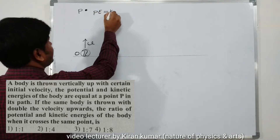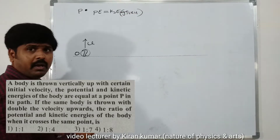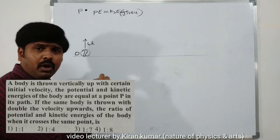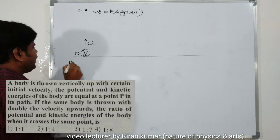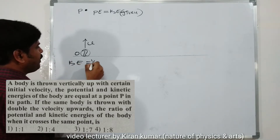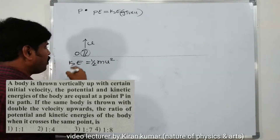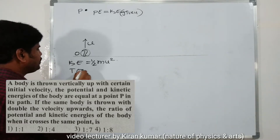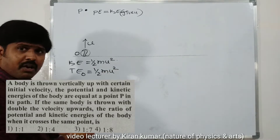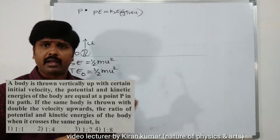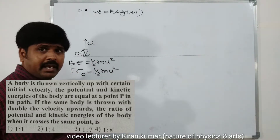Initially, the body has total energy in the form of kinetic energy only. That kinetic energy formula is ½mu². So the total energy at point O is equal to ½mu², because potential energy is zero at ground level. Now, at point P, potential energy equals kinetic energy as given.